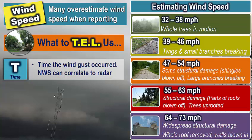To report wind speed, please go through the Tell method: time, event, and location. For the time, we want to know when the wind gust occurred. We can usually match this up using radar images, so an estimate of the time of occurrence is okay.